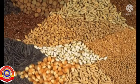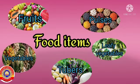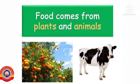What did we study in our last class? We discussed about food grains and the food items that we use — fruits, pulses, vegetables, tubers, and leafy vegetables. So now we know that food comes from both plants and animals.